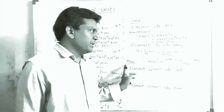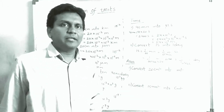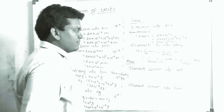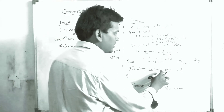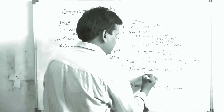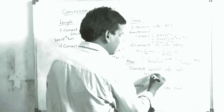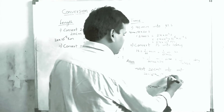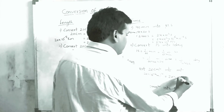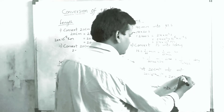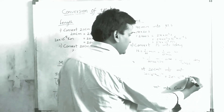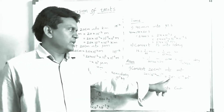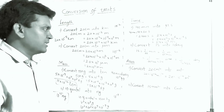Next, coming to area. The SI unit of area is meter square, so the given unit should first be converted into meter square. Convert 20 centimeter square into meter square. 20 cm² = 20 × (10⁻² m)² = 20 × 10⁻⁴ meter square.